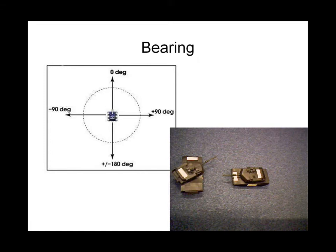In the slide you can see that your tank on the left hand side, tank A, is facing in an orderly direction, so it's facing 0 degrees. And tank B on the right hand side is to the right of it at an angle of 90 degrees. We therefore say that the bearing is plus 90 degrees.